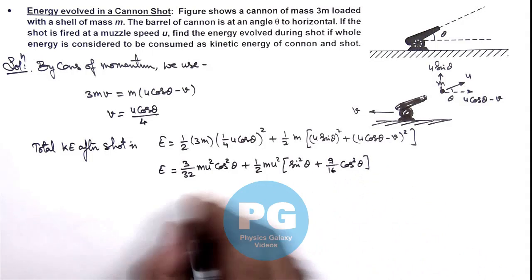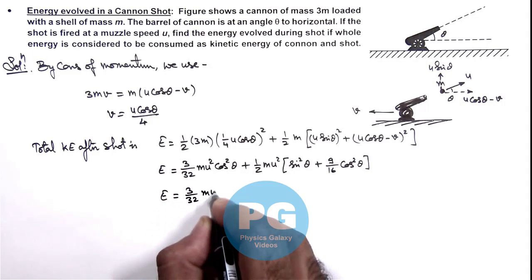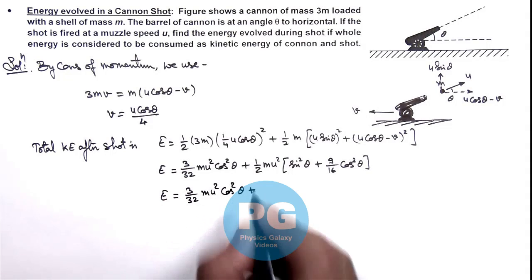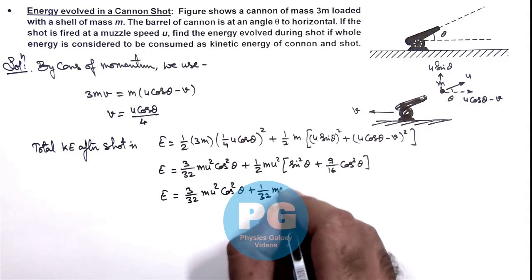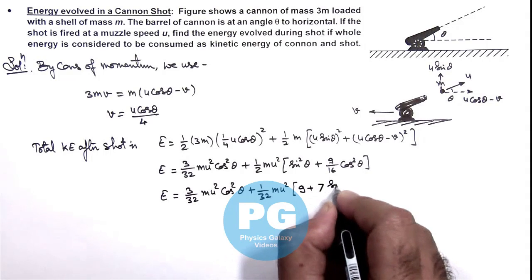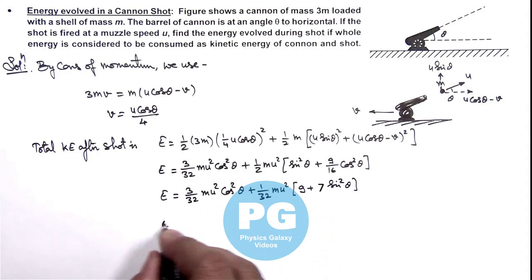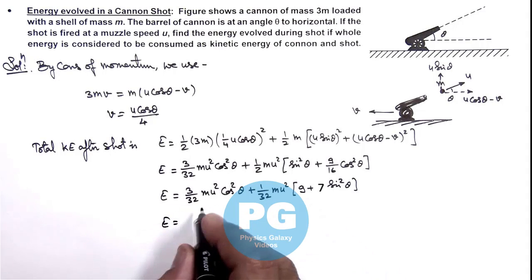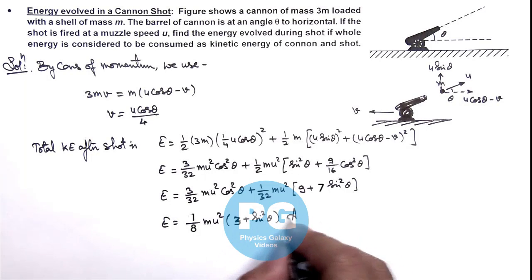Now in this relation, further on simplifying, we'll get the value of E as 3 by 32 m u square cos square theta plus, here we can take 16 common out so this will become 1 by 32 m u square multiplied by 9 plus 16 sine square theta. And finally on simplifying this, the final result after simplification will give us 1 by 8 m u square multiplied by 3 plus sine square theta. This is the final result of this problem.